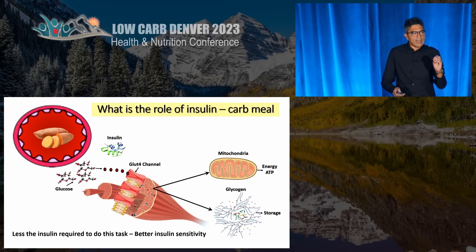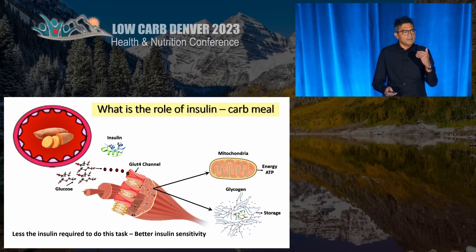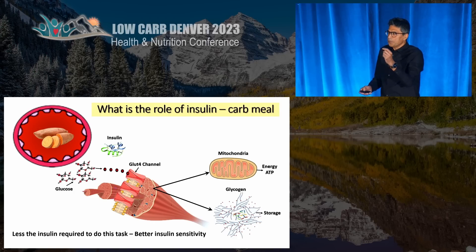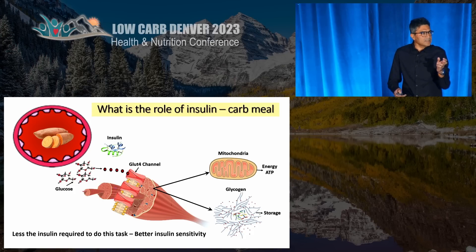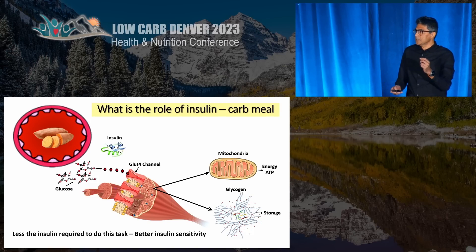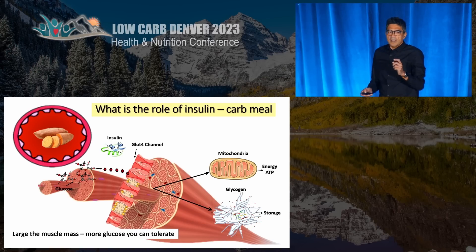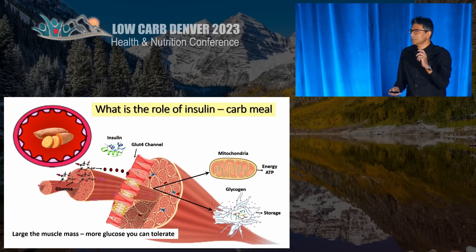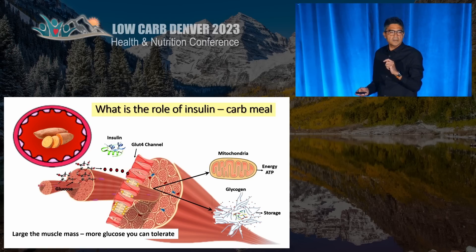Let's examine how muscles deal with insulin and food coming in. As glucose is coming in, insulin recruits a channel called the GLUT4 channel to drive the sugar into the muscles. The muscles can either burn it for fuel or store it as glycogen. The less insulin required to do this job, the more insulin sensitive you are. If you have a larger muscle mass, you can recruit a lot more GLUT4 channels and take in a lot more glucose before getting insulin resistant.